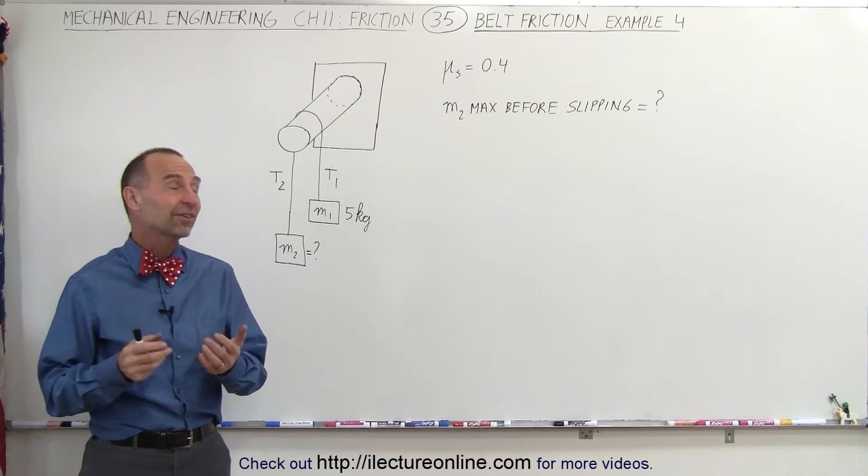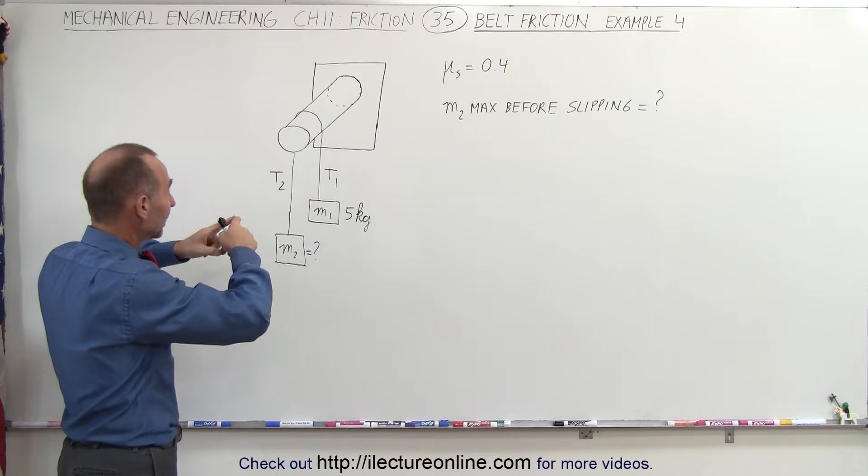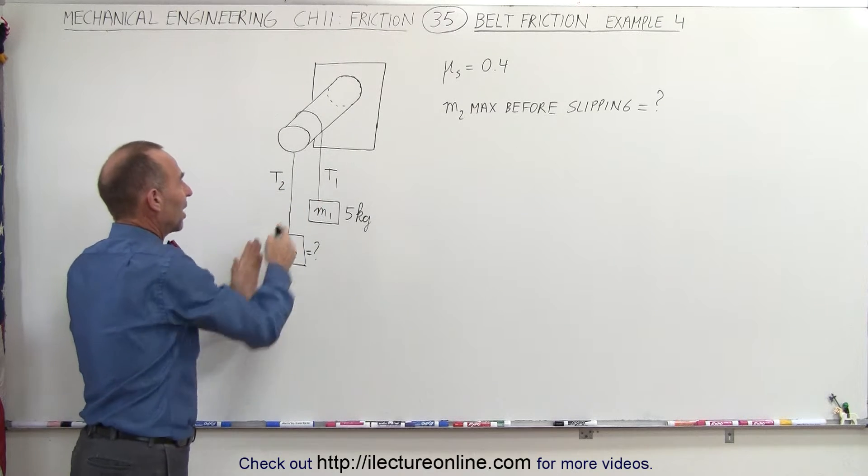Welcome to our lecture online. Our next example deals with a rope that's suspended across a peg like this and has two masses attached to the end of the rope.